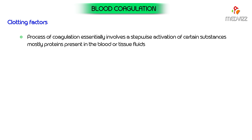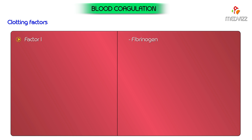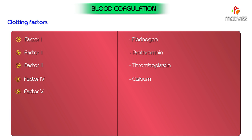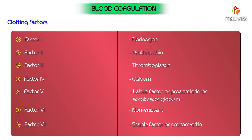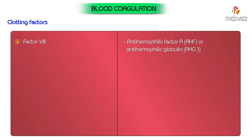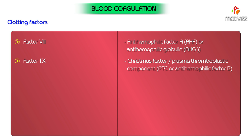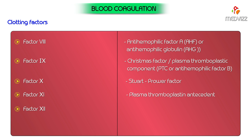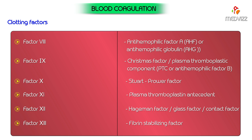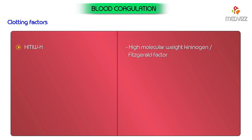These substances are called clotting factors and have been given Roman numerals: Factor 1 (fibrinogen), Factor 2 (prothrombin), Factor 3 (thromboplastin), Factor 4 (calcium), Factor 5 (labile factor or pro-accelerant), Factor 6 (non-existent), Factor 7 (stable factor or pro-convertin), Factor 8 (anti-hemophilic factor A or anti-hemophilic globulin), Factor 9 (Christmas factor or plasma thromboplastic component), Factor 10 (Steward-Prower factor), Factor 11 (plasma thromboplastin antecedent), Factor 12 (Hegeman's factor or glass factor, also known as contact factor), and Factor 13 (fibrin stabilizing factor), high molecular weight kininogen (Fitzgerald factor), pre-kallikrein (Fletcher factor), kallikrein, and platelet phospholipids.